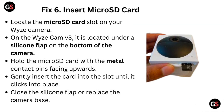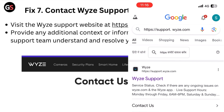Fix six: insert a micro SD card. Locate the micro SD card slot on your Wyze camera — on the Wyze Camera v3, it is located under a silicone flap on the bottom of the camera. Hold the micro SD card with the metal contact pins facing upward and gently insert the card into the slot until it clicks into place. Close the silicone flap or replace the camera base.